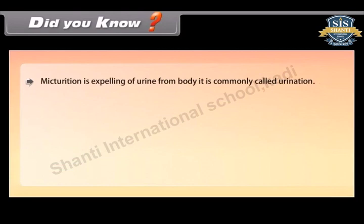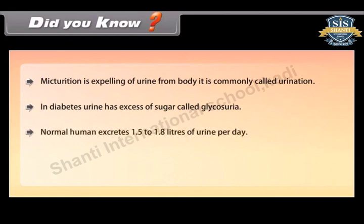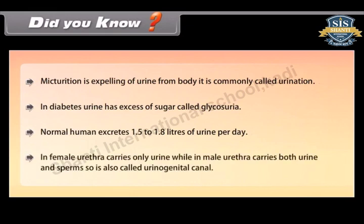Micturition is the expelling of urine from the body, commonly called urination. In diabetes, urine has excess sugar, called glycosuria. Normal humans excrete 1.5 to 1.8 litres of urine per day. In females, the urethra carries only urine, while in males, the urethra carries both urine and sperms, so it is also called the urinogenital canal.